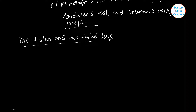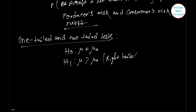In any test, the critical region is represented by a portion of the area under the probability curve of the sampling distribution of the test statistic. A test of any statistical hypothesis where the alternative hypothesis is one-tailed — right-tailed or left-tailed — is called a one-tailed test. For example, a test for testing the mean of a population: H₀: μ = μ₀ against H₁: μ > μ₀ is right-tailed, or H₁: μ < μ₀ is called left-tailed — a single-tailed test.